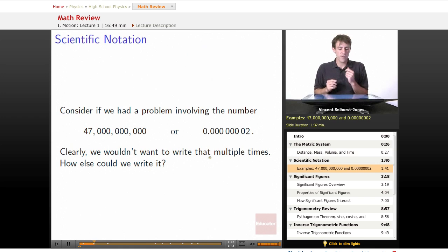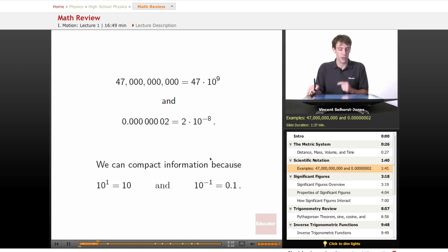Scientific notation. What if we had a problem involving the number 47 billion or 0.0000002? If you had to write that number more than two or three times, I think you'd be unhappy. It's a pain, and you're not really putting in much information in those zeros. So how else could we write it? The trick is scientific notation.